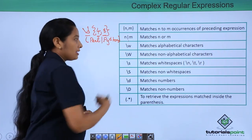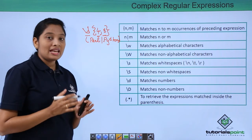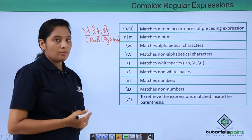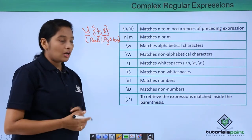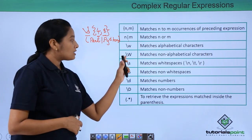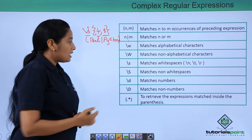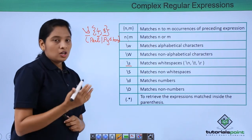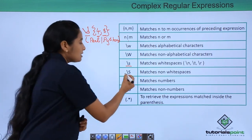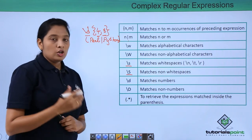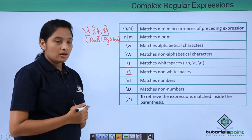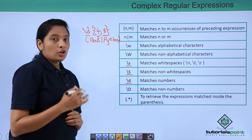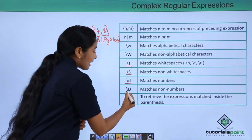Next is matching alphabetical characters: if you want to match any alphabetical characters, then just use \w. Next, to match white spaces, use \s. For non-white spaces, use \S (capital S). To match any number, use \d. For non-numbers, use \D (capital D).